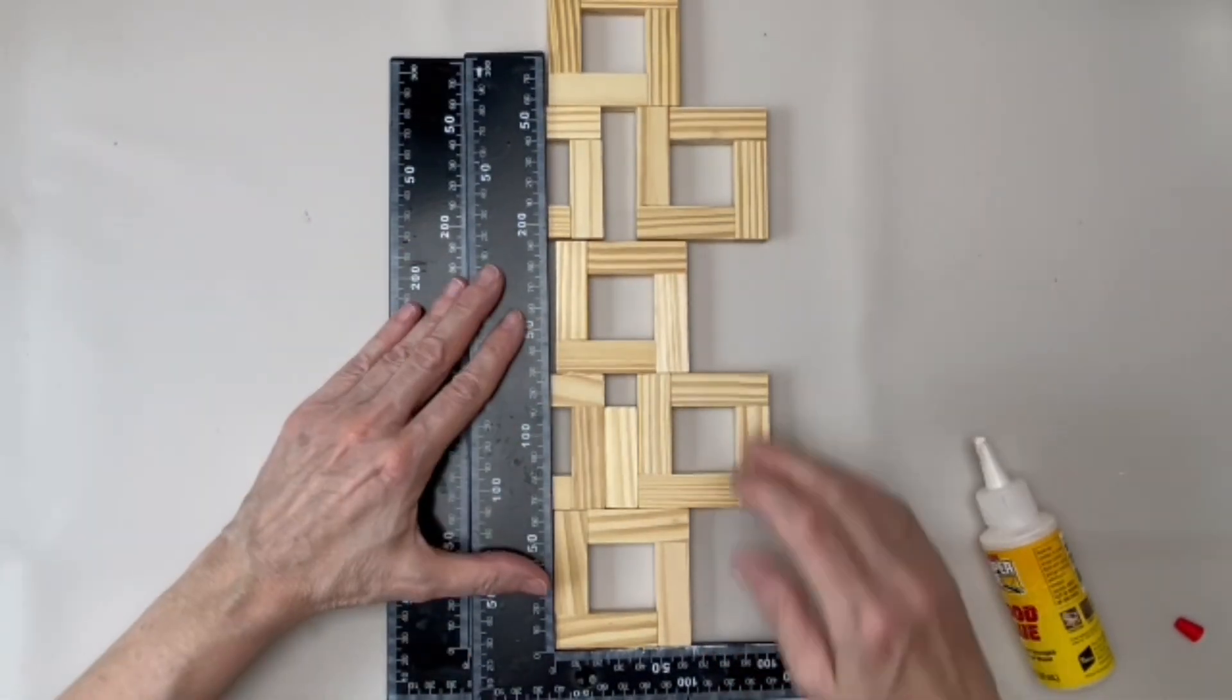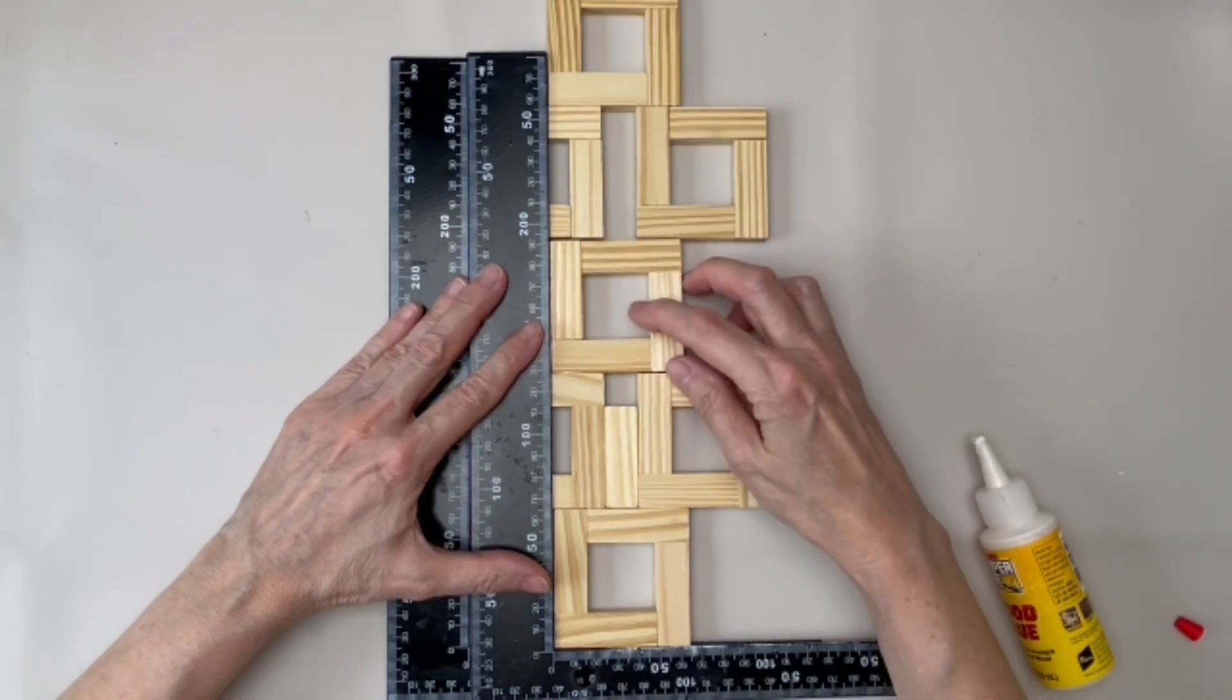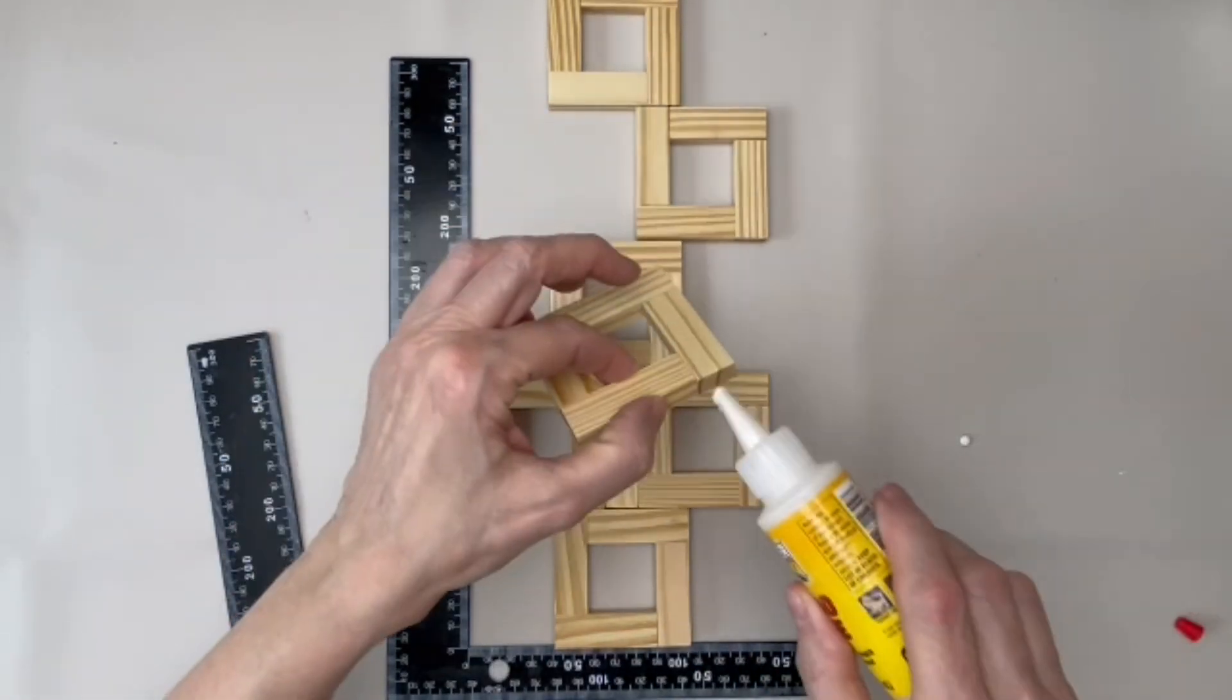Again, use a square to check the alignment. Make one more in this pattern, and make one more in the original pattern.